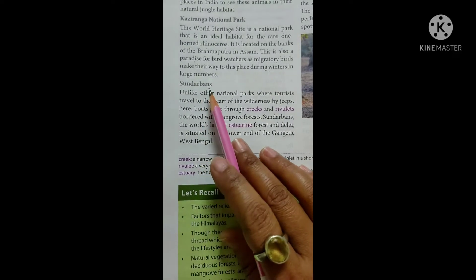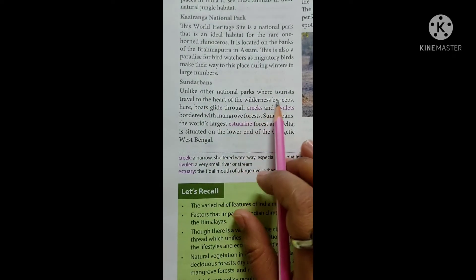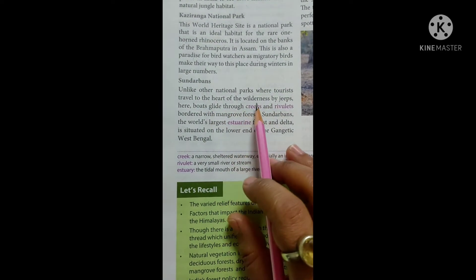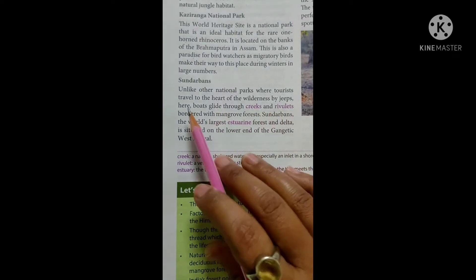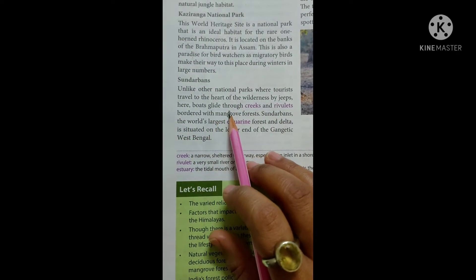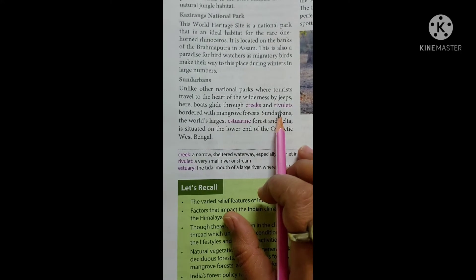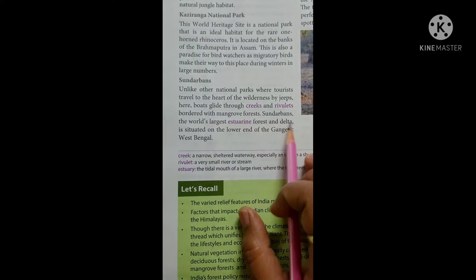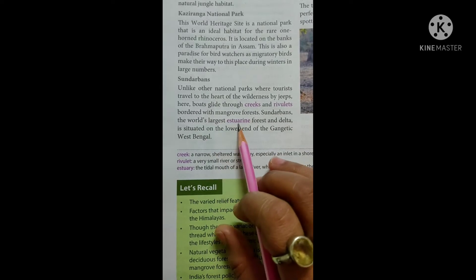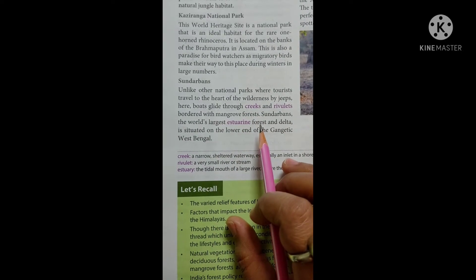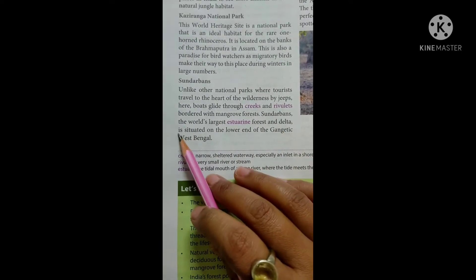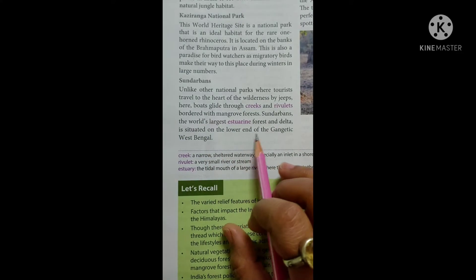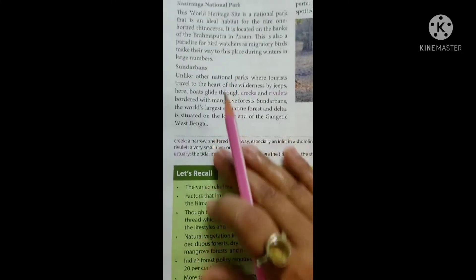Next is Sundarbans. Unlike other national parks where tourists travel to the heart of the wilderness by jeeps, here boats glide through creeks and rivulets bordered with mangrove forest. Sundarbans, the world's largest estuary forest and delta, is situated on the lower end of the Gangetic West Bengal.